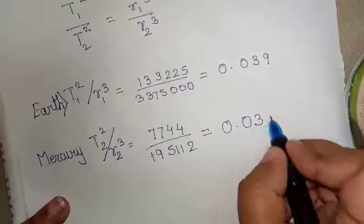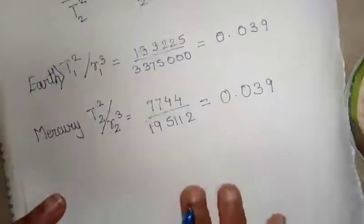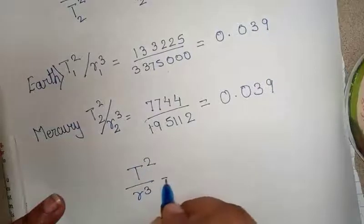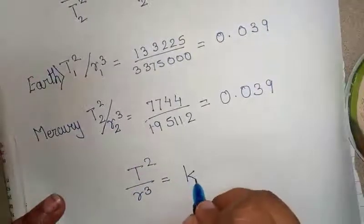So what Kepler says is correct: that T² upon r³ is a constant, which is denoted by k.